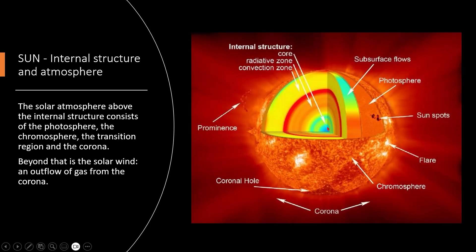Here we have a picture again, the core, the radiative zone, and the convection zone. We have blue, green, orange, red, and yellow. On the outside we have the subsurface flows, photosphere, sunspots, flare, chromosphere. And that's actually the corona, a coronal hole, and a coronal prominence. This is where the Sun changes shape with a protrusion outside of its circular shape.